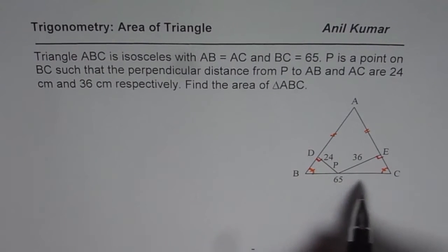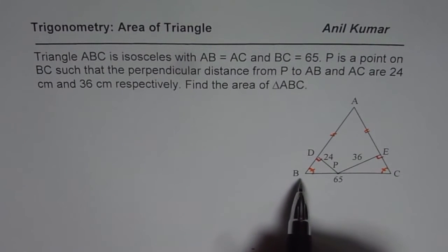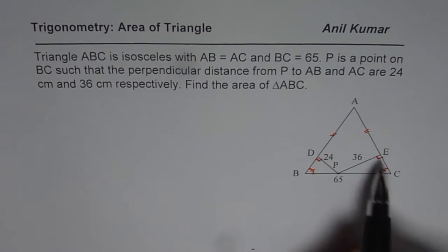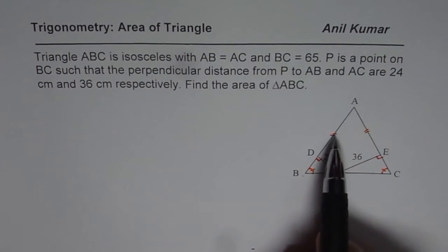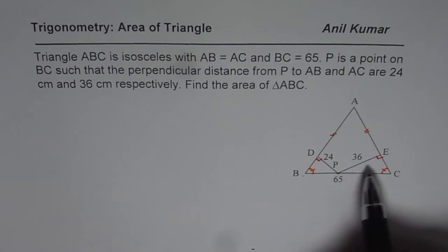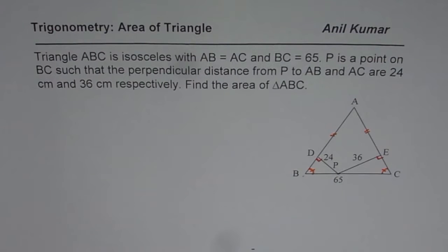We are given triangle ABC where point P is on BC. Length of BC is 65. We know ABC is an isosceles triangle where AB equals AC. From P, if you draw a perpendicular on AC you get point E which is 36 cm away, and D and P are 24 cm away. You need to find the area of triangle ABC. This is a thinking question — you can pause the video, answer, and then look into my suggestion.